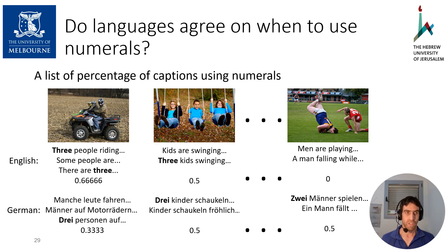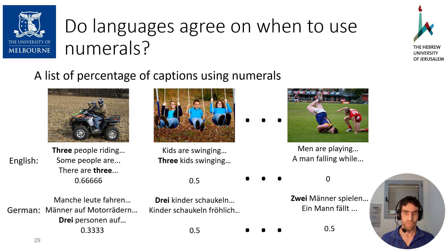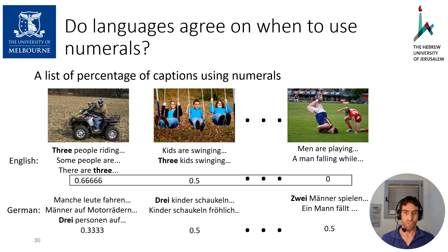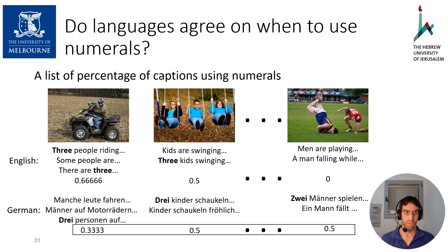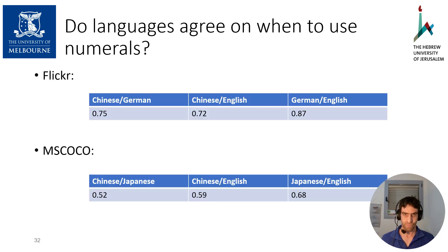We want to test whether different languages agree on which images should be described using numerals. We use the multilingual datasets MSCOCO and Flickr. For each image, we compute the percentage of captions describing it using numerals — for example, if three captions are given and two use numerals, we write 0.6666. We then put all these numbers in a list for each language and compute the Pearson correlation of these lists. The common practice is that a correlation higher than 0.5 is considered high. The correlation is high in both datasets for all language pairs. The captions are not translated, so the non-English annotators were not influenced by the English captions.